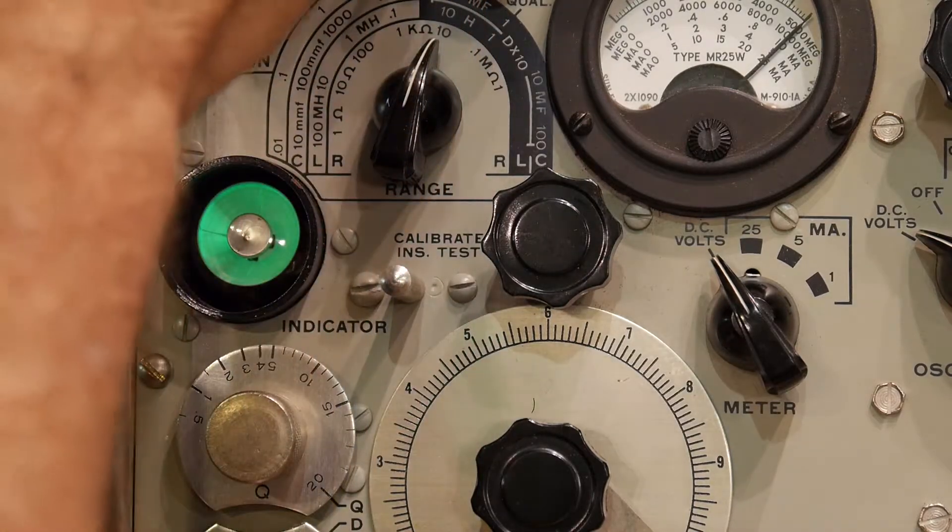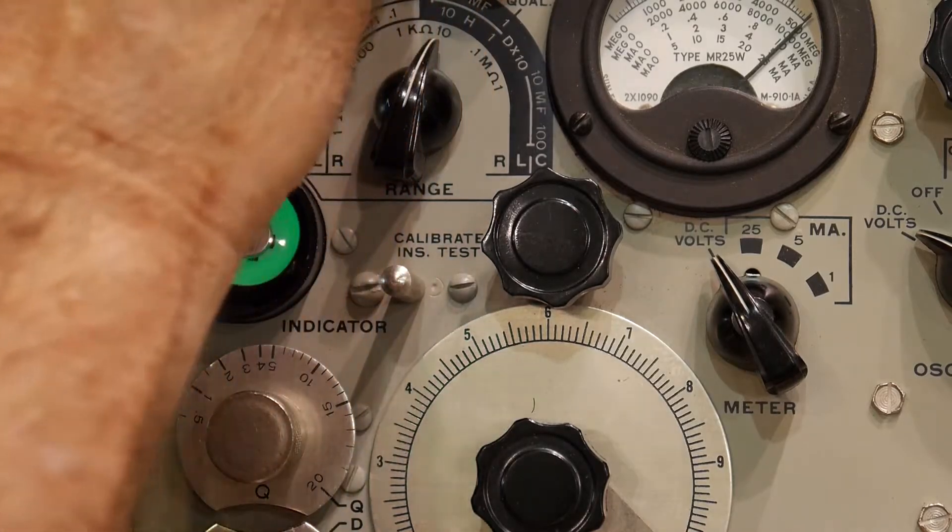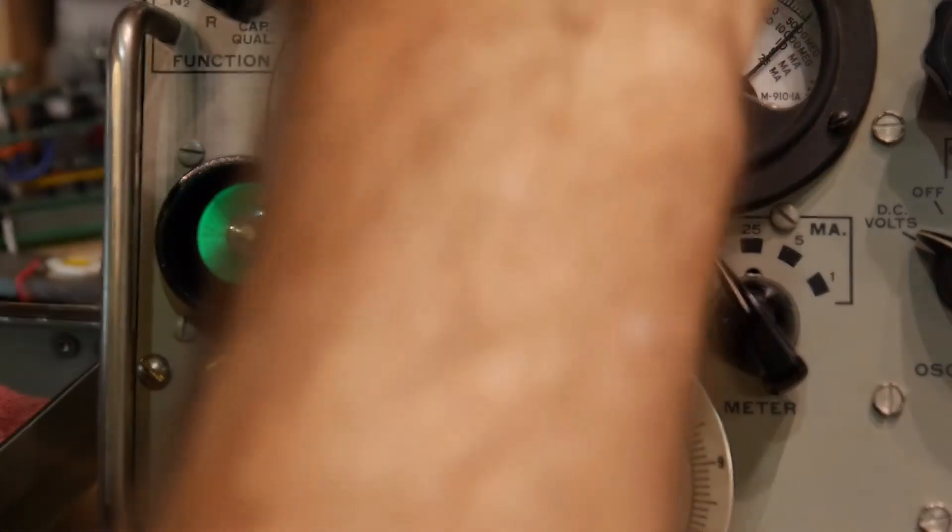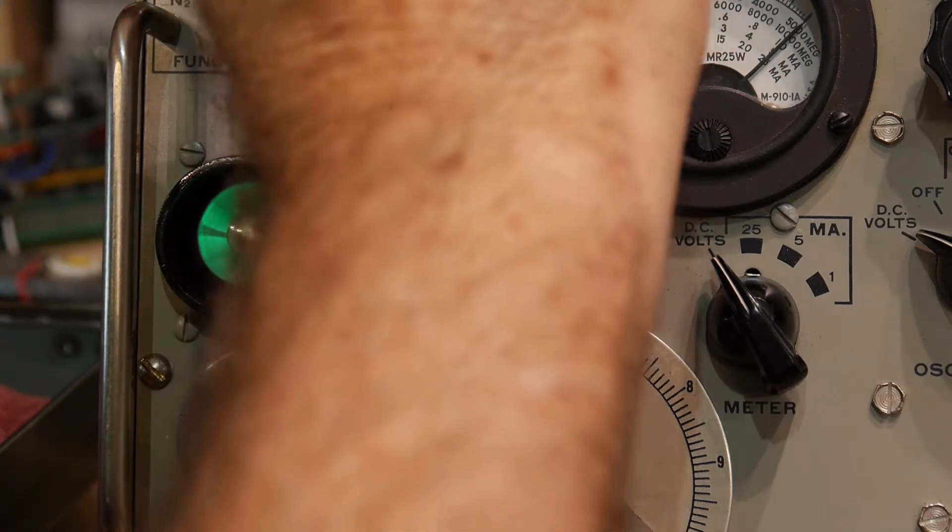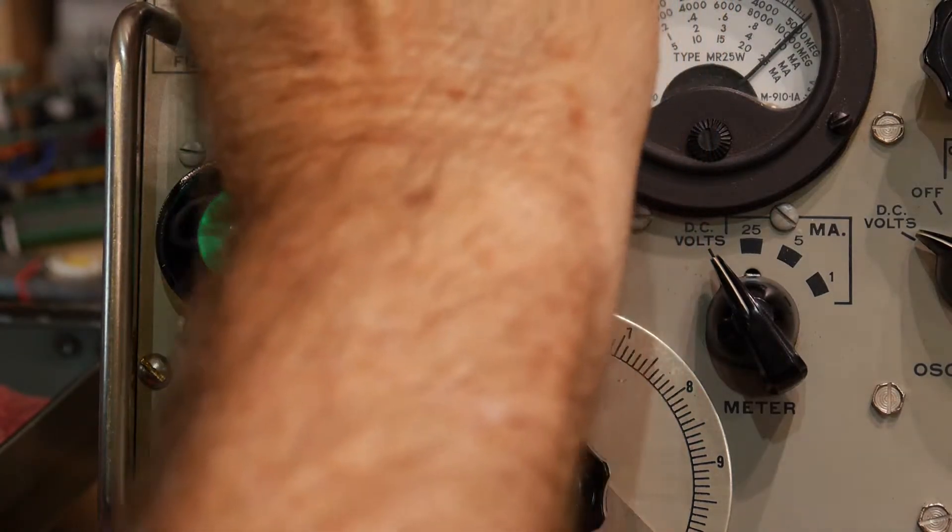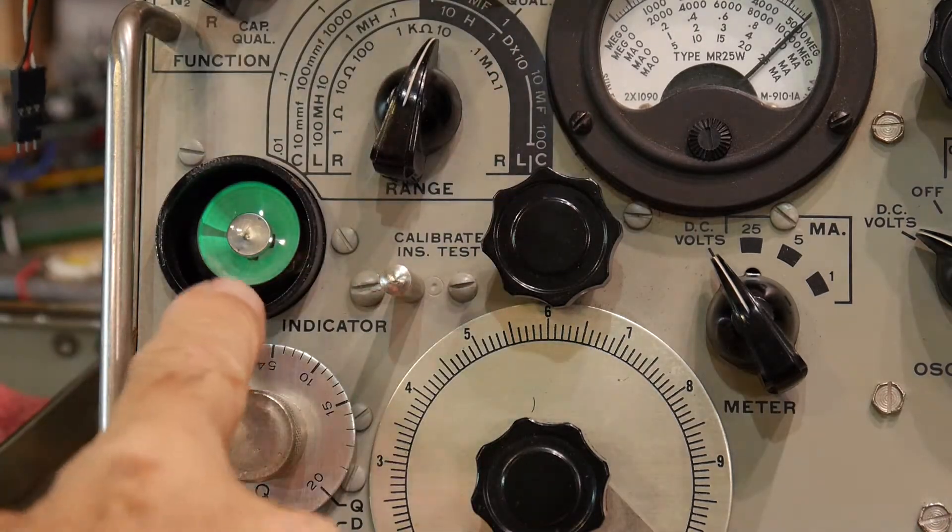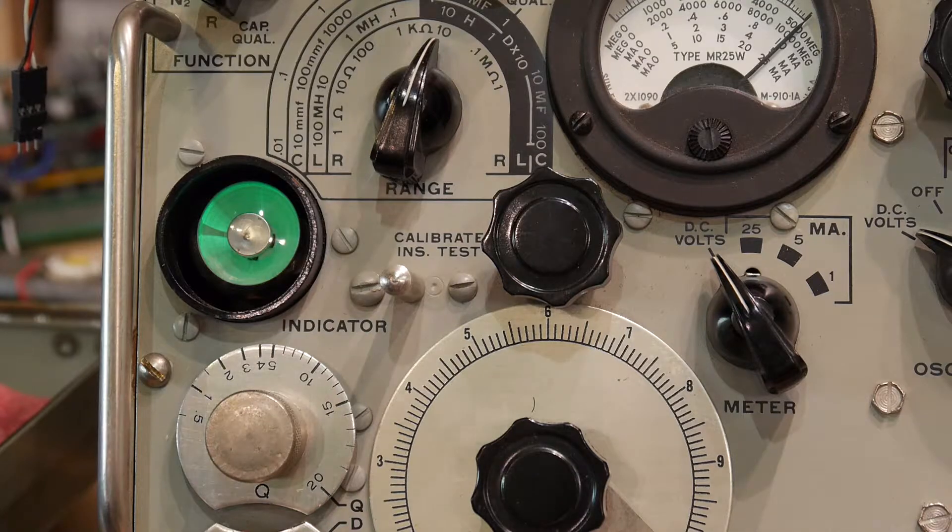So what we're going to do is put it on the terminals here. The terminals do have 500 volts on them, so you have to be careful when you do this. We will put that on. Alright, and you see that the eye has opened up. That says there's been some leakage in that wire.